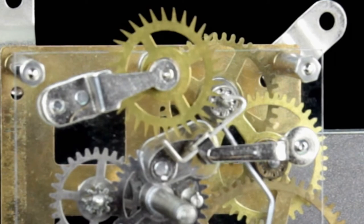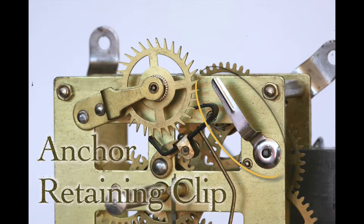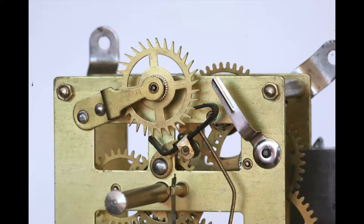The anchor is held in place on the post of the pallet cock by the anchor retaining clip. The points on the anchor where the escape wheel teeth strike are called the pallets.